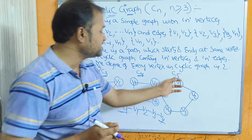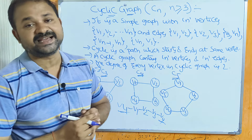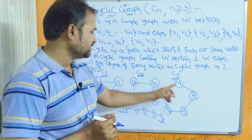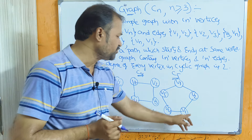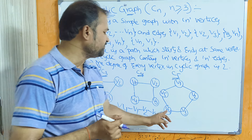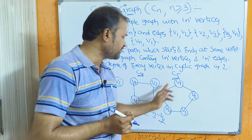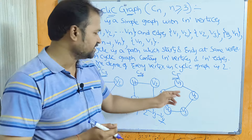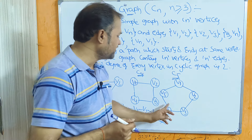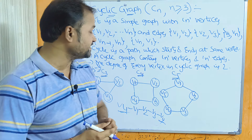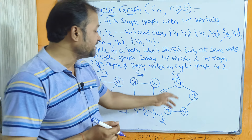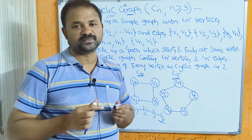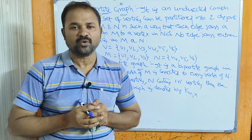C5 is a cyclic graph with 5 vertices: V1-V2, V2-V3, V3-V4, V4-V5, V5-V1. We have 5 vertices and 5 edges, and the degree of every vertex is 2. This is about cyclic graph.